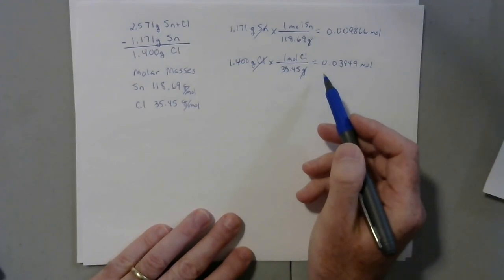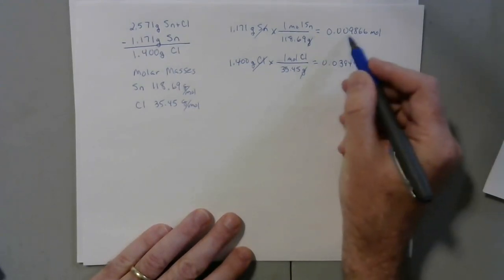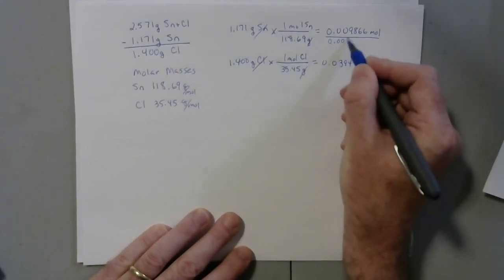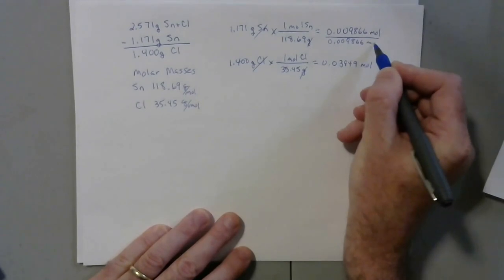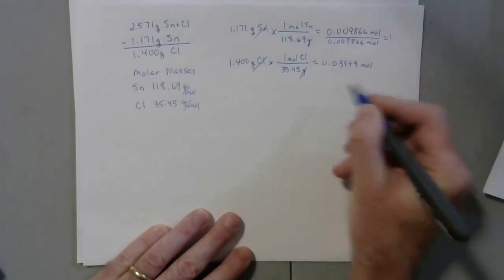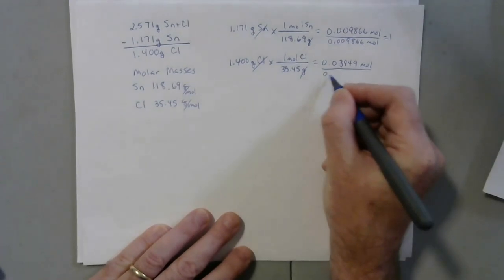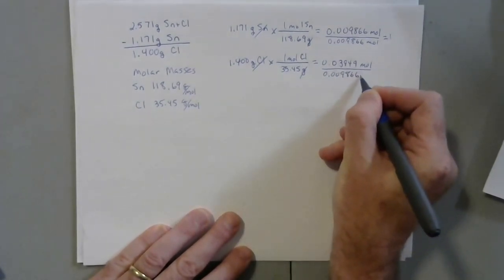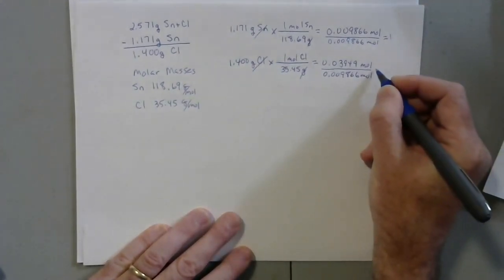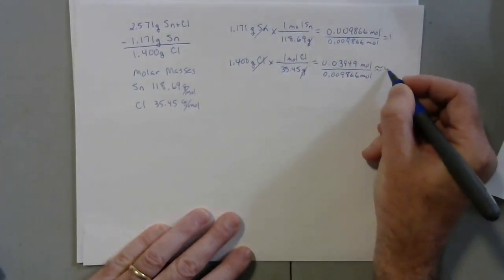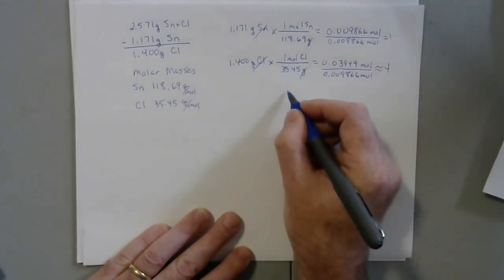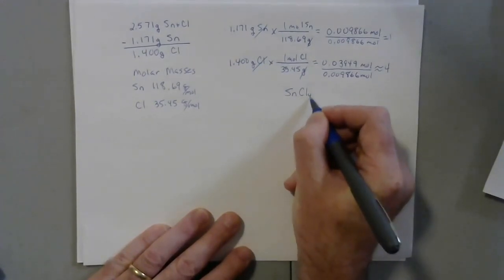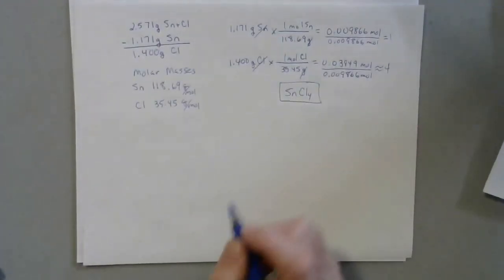Now we need to divide through by the smallest number of moles, which is the tin value since it has two zeros out front. When we divide it by itself, we get 1. Then we divide the chlorine moles by that same smallest number, and what we find is approximately 4. So we can say that the empirical formula is SnCl4, and that would be our answer.